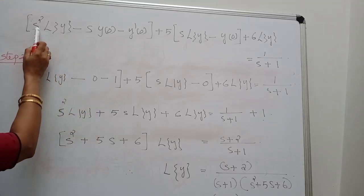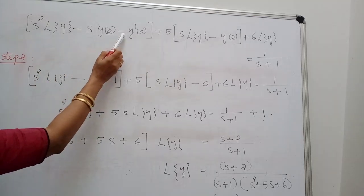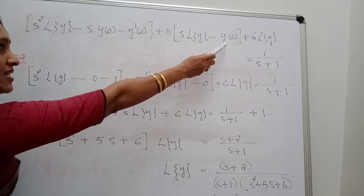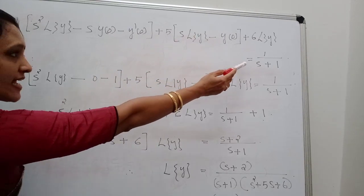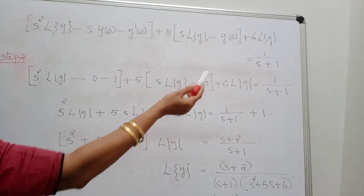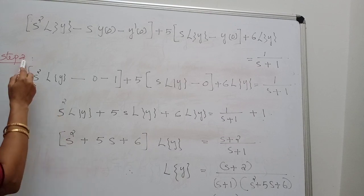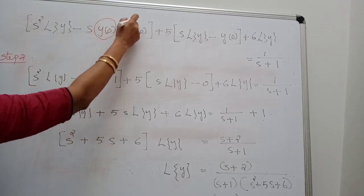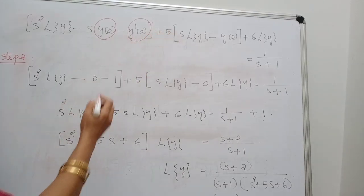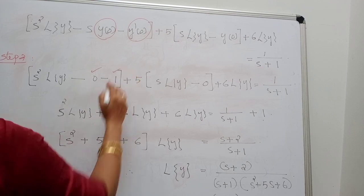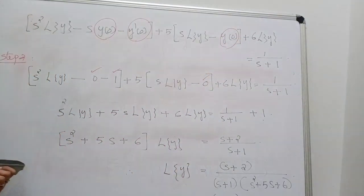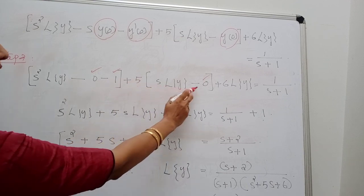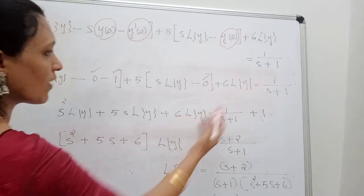Expanding: [s²·L{y} − s·y(0) − y'(0)] + 5·[s·L{y} − y(0)] + 6·L{y} = 1/(s+1). In step 2, applying initial conditions y(0) = 0 and y'(0) = 1: s²·L{y} − 0 − 1 + 5·[s·L{y} − 0] + 6·L{y} = 1/(s+1).